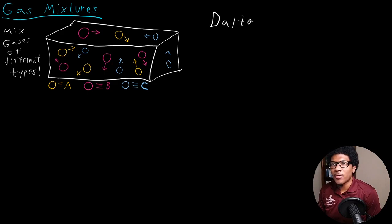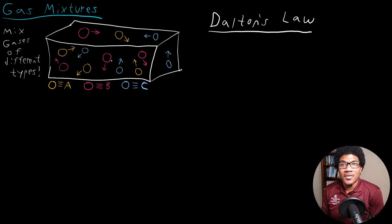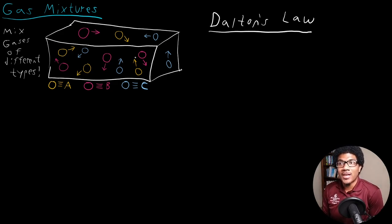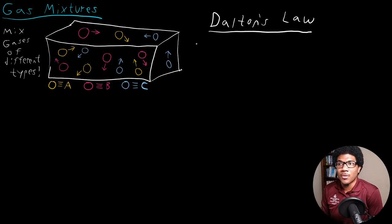Dalton's Law of Partial Pressures states that the total pressure inside a container is just going to be the sum of each of the individual partial pressures that each individual gas would exert on its own in a container of the same size. Basically, every single gas is going to have its own pressure that it would exert if there was nothing else in the container, and the total pressure is just the sum of each of those contributions.